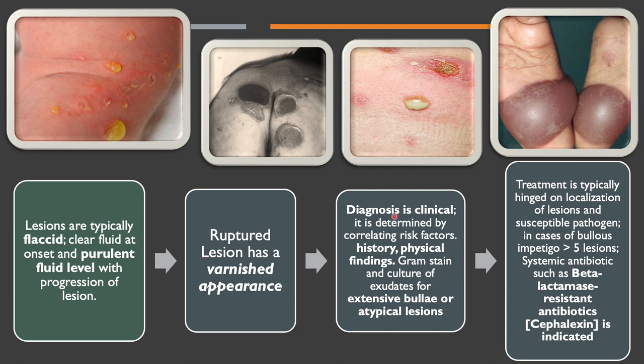Diagnosis is clinical. It is determined by correlating risk factors, historical data, and physical findings to arrive at a proper diagnosis. More importantly, gram stain and culture of exudates are indicated for ostensibly atypical presentation of lesions, or when in doubt of the appearance of lesions.